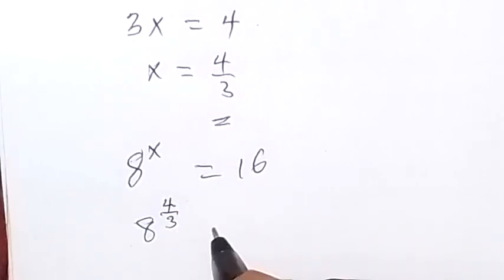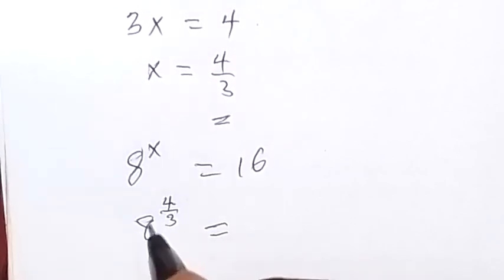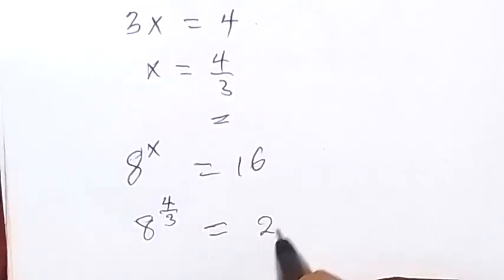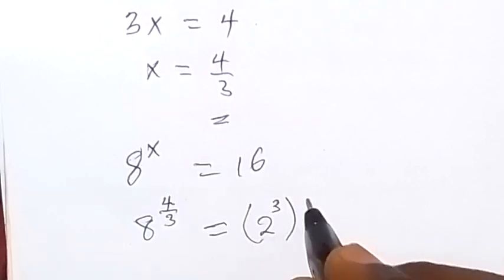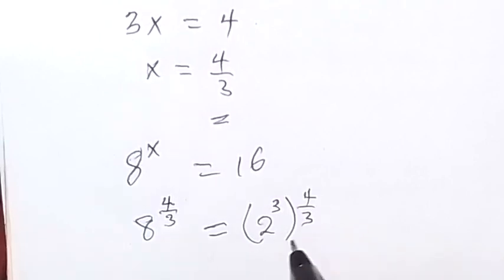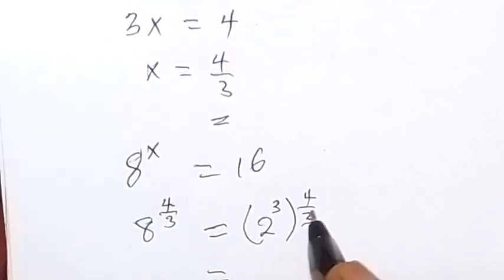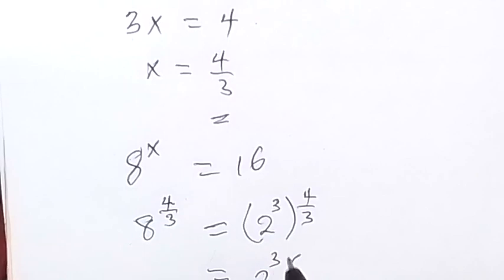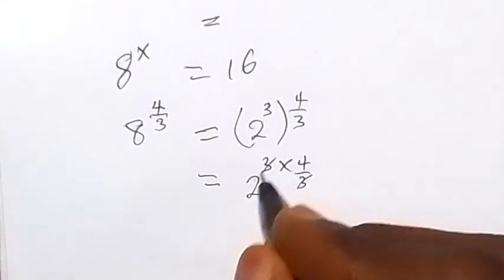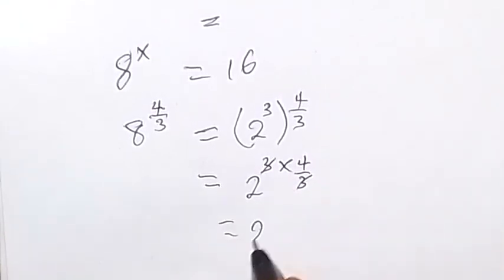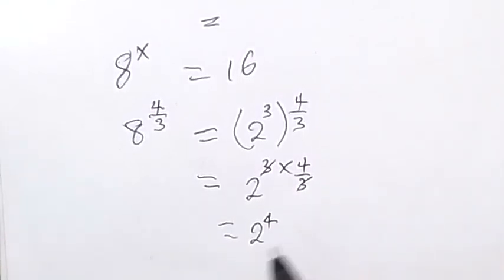And when we look at it, we can see that this will be equals to, change this 8 also to 2 raised to power 3, then raised to power 4 over 3. So when you look at that, you see that this power can multiply and this is 2 raised to power 3 times 4 over 3. Therefore, here now you can see that 3 cancels 3 and that's 2 raised to power 4. And that's of course 16.